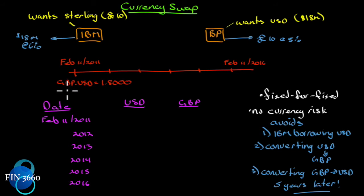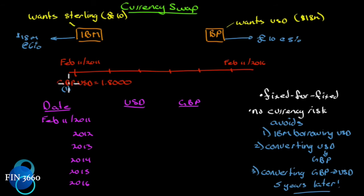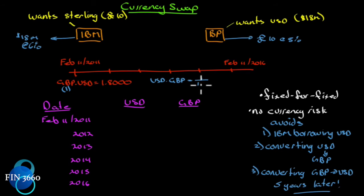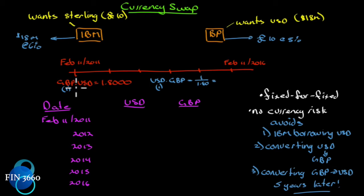Rates are quoted as one pair against another. This is the pound/US dollar pair. We always assign the value of one to the first of the pair, so we read it as: one British pound buys $1.80 US. If we needed to quote it the other way — US dollar to Great British pound — it would be one divided by 1.80, meaning one US dollar buys less than one pound.